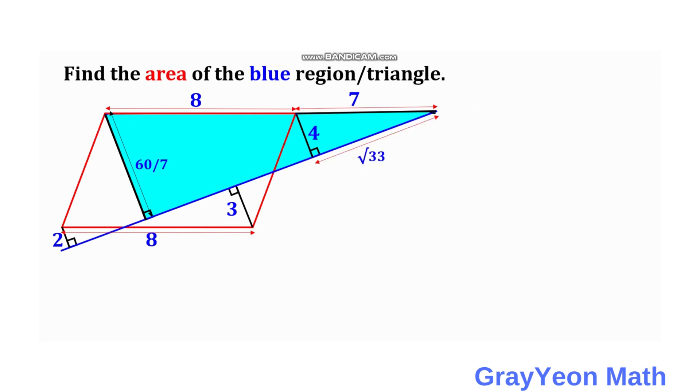Okay, so next thing is we need to get this length. This is actually the base of the larger right triangle. Let's call this as a. So we have a over 60 over 7, it is equal to square root of 33 over 4.